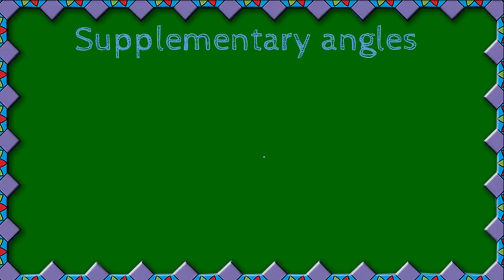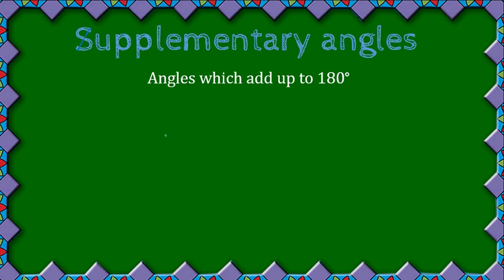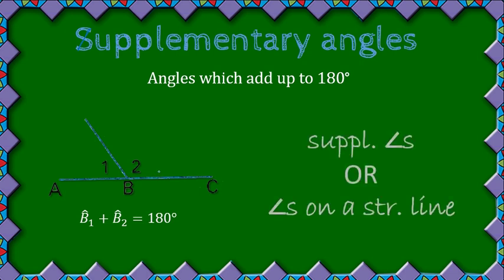Next up, we have supplementary angles. Supplementary angles add up to 180 degrees. To distinguish them from complementary angles, draw a line through the S — it forms an 8, reminding us they add up to 180 degrees. The reason you use is either 'supplementary angles' or 'angles on a straight line', with 'angles on a straight line' being the more preferable one.